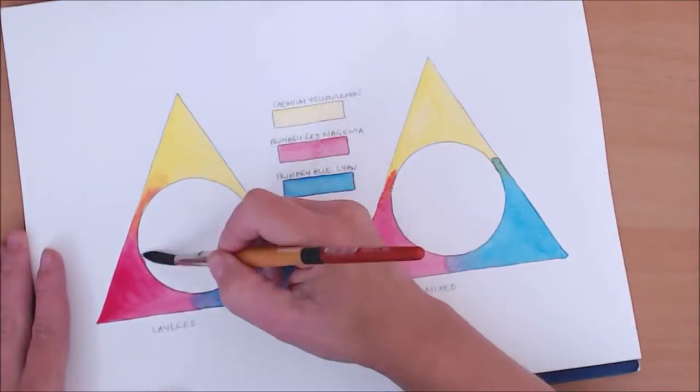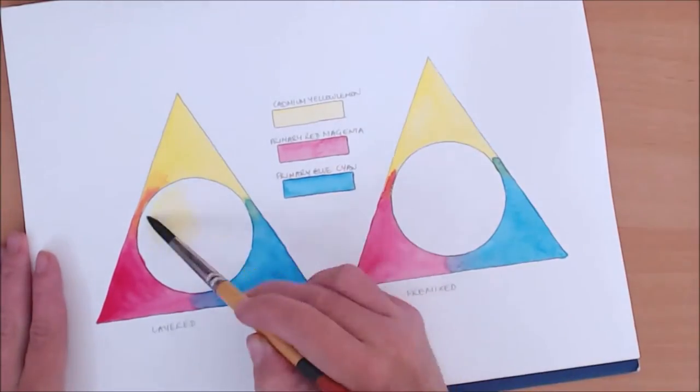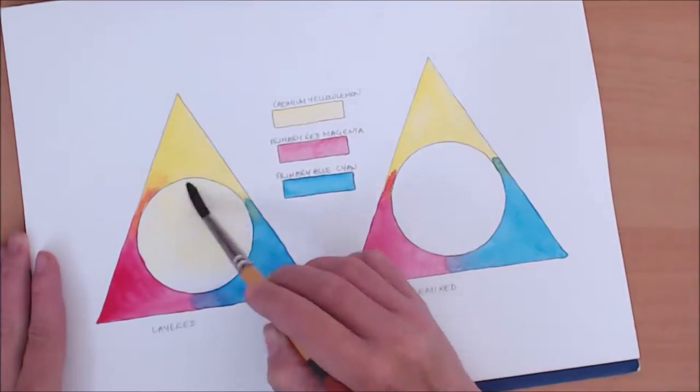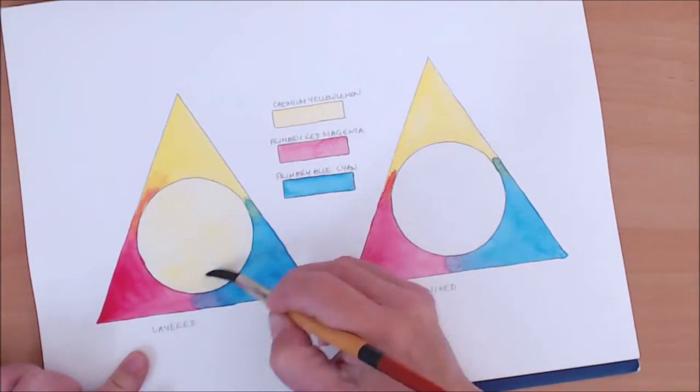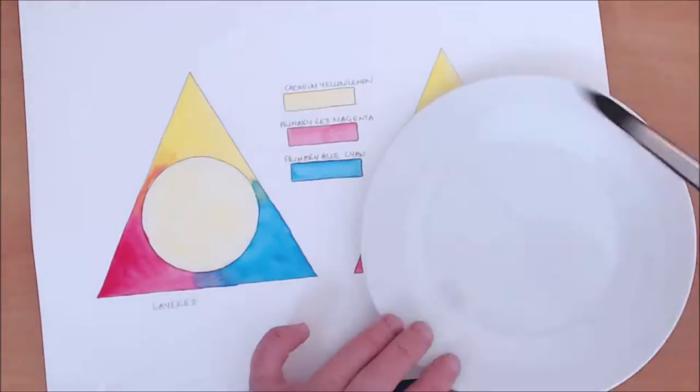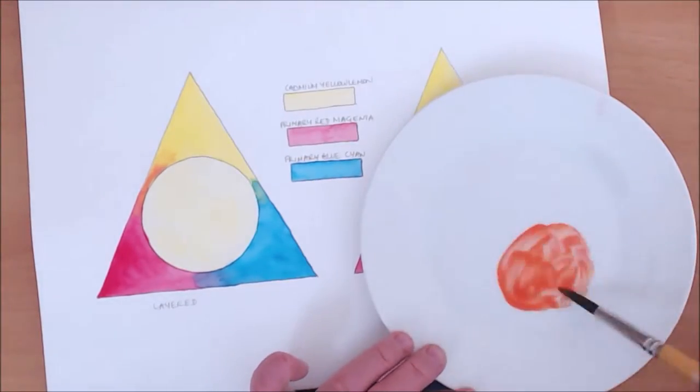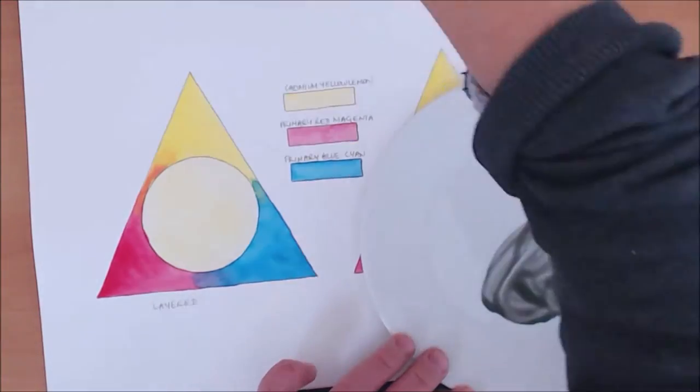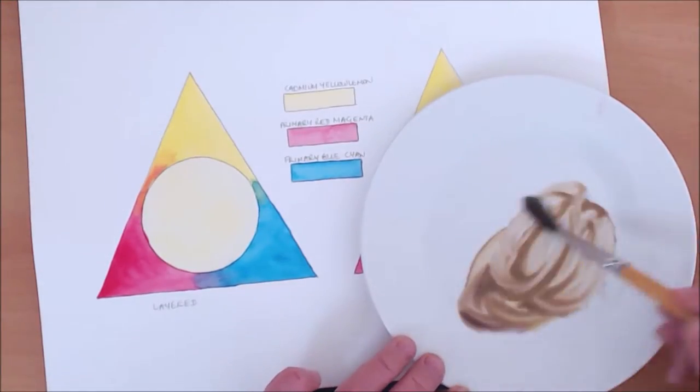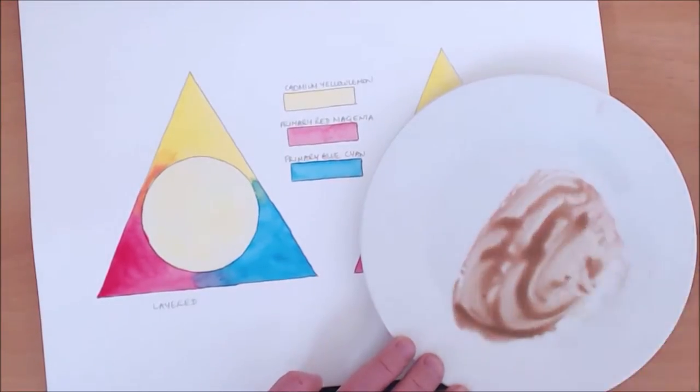So here I've prepared a sheet where I'm gonna do a layered skin tone on the left and a pre-mixed skin tone on the right. So here I'm mixing yellow and magenta with a bit of blue, and it takes me a couple of tries to get it to the shade I want.